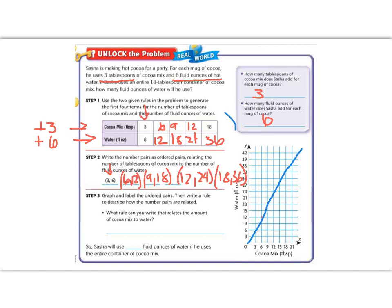Well, if we look at from here to here, how did I get from three to six? Well, three times two is six. Let's see if the pattern continues. Six times two is twelve. Yes. Nine times two is eighteen. Yes. So my rule is that I am going to multiply by two. So Sasha will use thirty-six fluid ounces of water if she wants to use the whole container of cocoa mix.